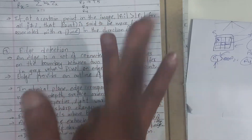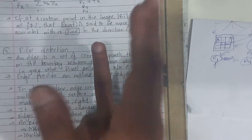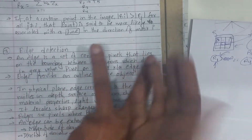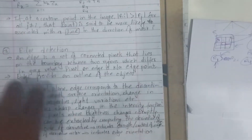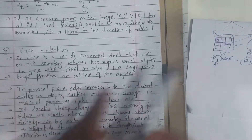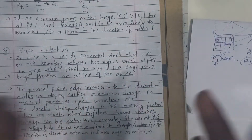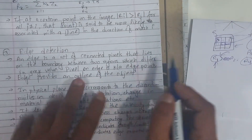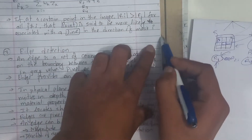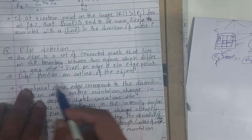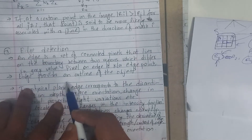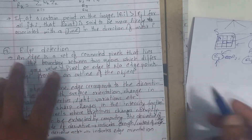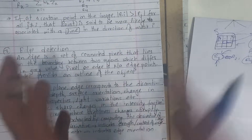What is the edge? There is a gray value change. This is the gray value change. This is the gray level. This is the boundary. Pixel on an edge is known as Edge Points. An edge provides an outline of the object.